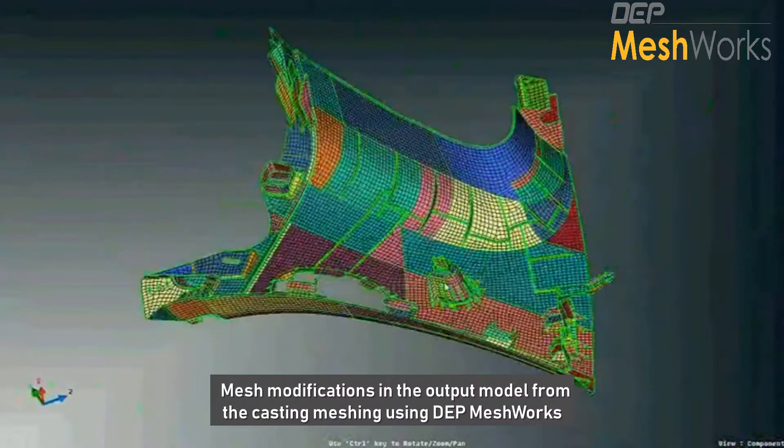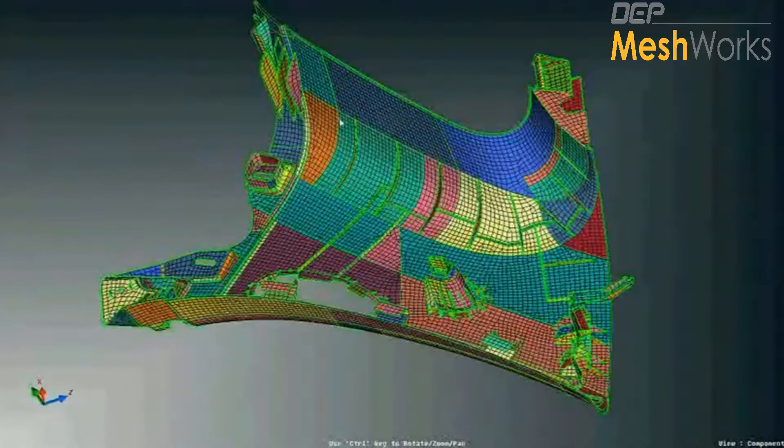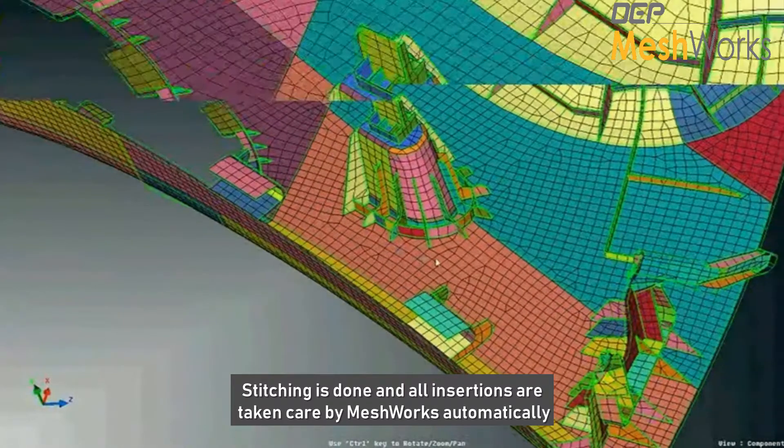As you can see, this is the output from the casting machine, and this is a one-push button where the machine has been created and all the stitching and insertion has been taken care by the tool automatically.